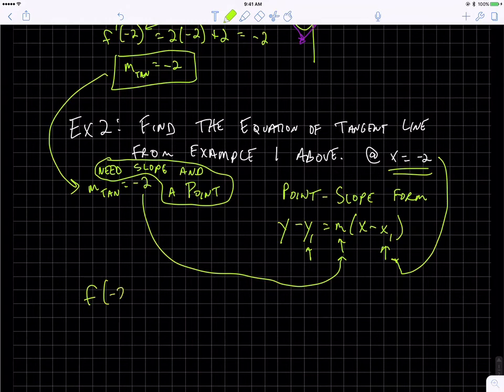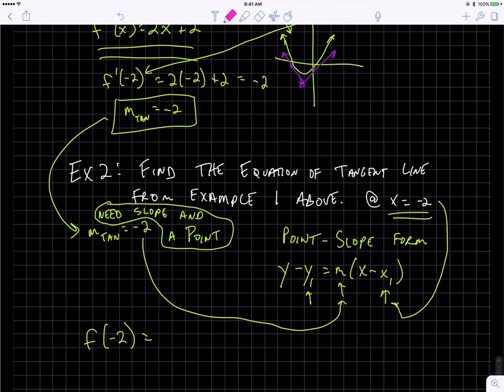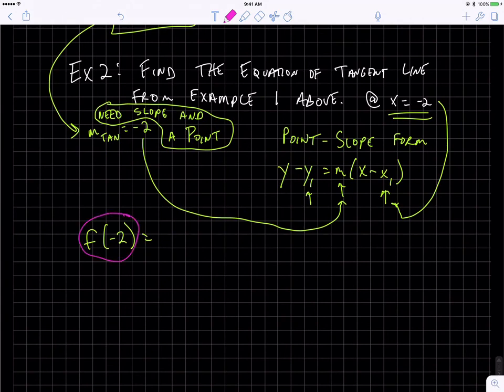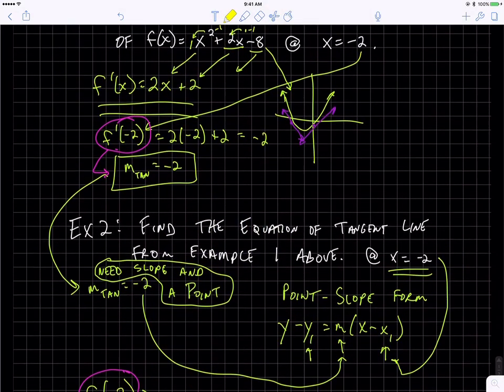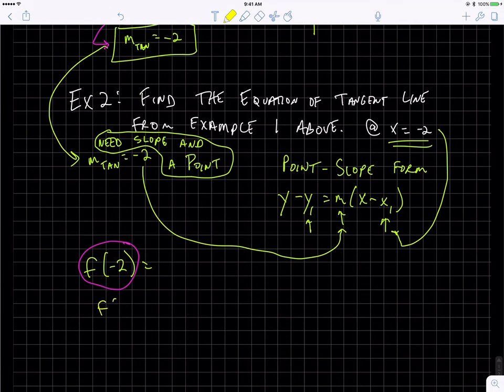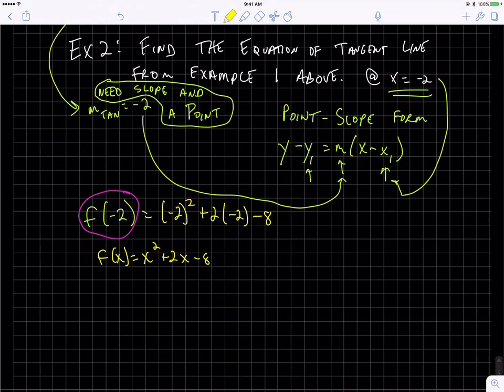I already know the x value for that point is negative 2. So I'm going to plug it into f. Note that I'm not plugging it into f prime. Up here, I was plugging it into f prime to find the slope. Down here, I plugged the x value into f to find y1 or the y value of our point. So the original function was x squared plus 2x minus 8. So I'm going to plug negative 2 into that guy. So that comes out to be 4 minus 4 minus 8, negative 8.